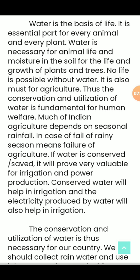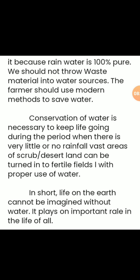Conserved water will help in irrigation, and electricity produced by water will also help in irrigation. We should collect rainwater and use it, because rainwater is 100% pure.